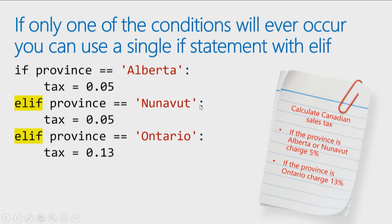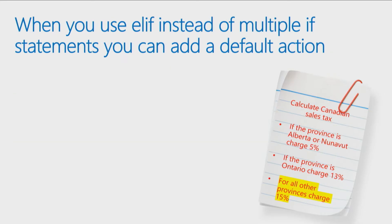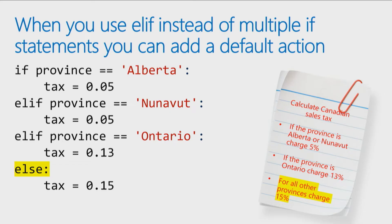You still need that colon at the end of each statement. Another advantage of using ELIF is it allows you to put a default action in there as well. So I can say: for Alberta, here's the rate; for Nunavut, here's the rate; for Ontario, this is the rate; and for anything else, just set the tax to 15%. So ELIF gives you that default else action for all remaining cases.